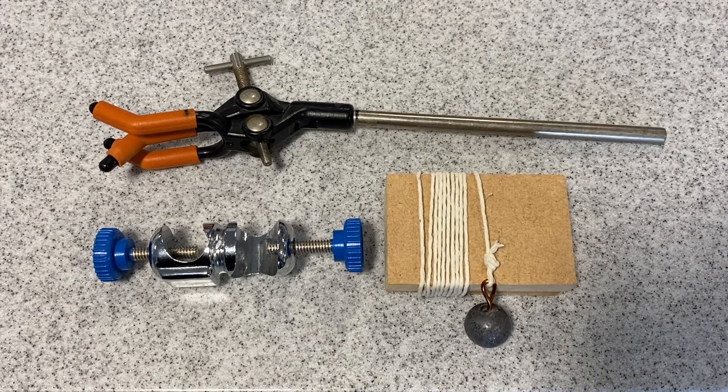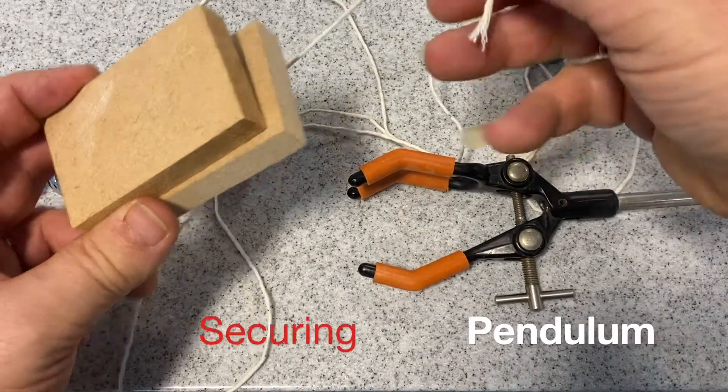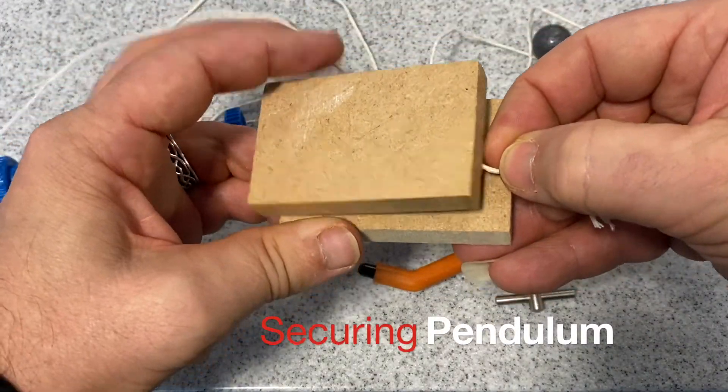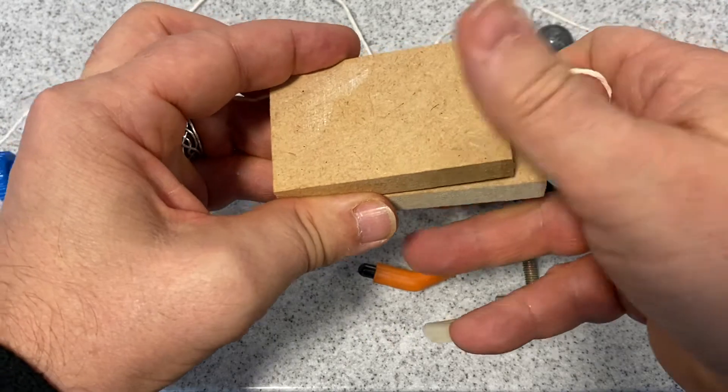Using the boss and clamp, secure the pendulum using the two boards with a loop of string between the boards to provide greater stability.